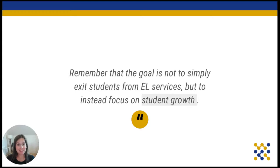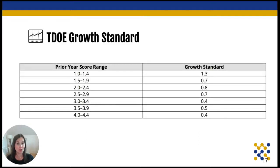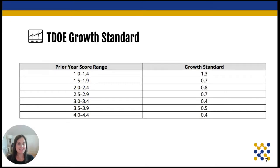Something we want to remind ourselves and others who work with multilingual students: the goal is not for students to simply exit services — we need these students to grow in their English proficiency every year. What's challenging is figuring out appropriate growth. This is a look at the Tennessee Department of Education growth standard. On the left, you'll find the ACCESS score from the student's most previous test. On the right, you'll see how much that student is expected to grow in a full year's time. This chart is useful for determining if your service to that student is effective and if the student is on track.